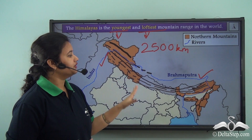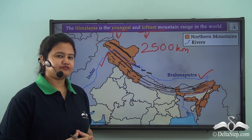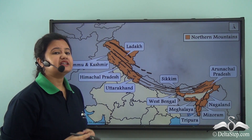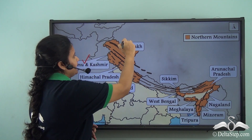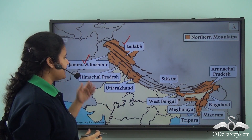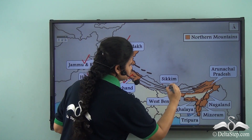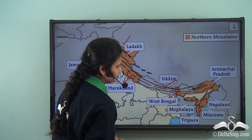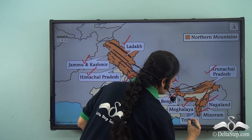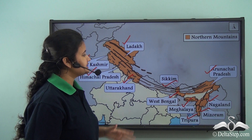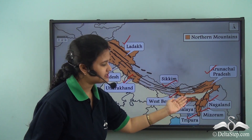This physical feature encompasses many states of India. The states and union territories that belong to the northern mountains are Jammu and Kashmir and Ladakh, which are two union territories, followed by several states: Himachal Pradesh, Uttarakhand, Sikkim, West Bengal, Meghalaya, Arunachal Pradesh, Nagaland, Mizoram, and Tripura. So the northern mountains comprise many northern and northeastern states of India.